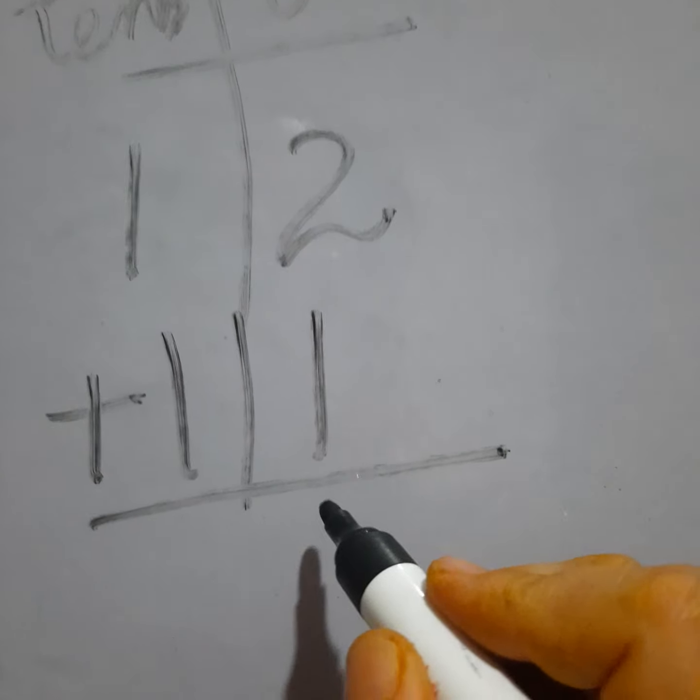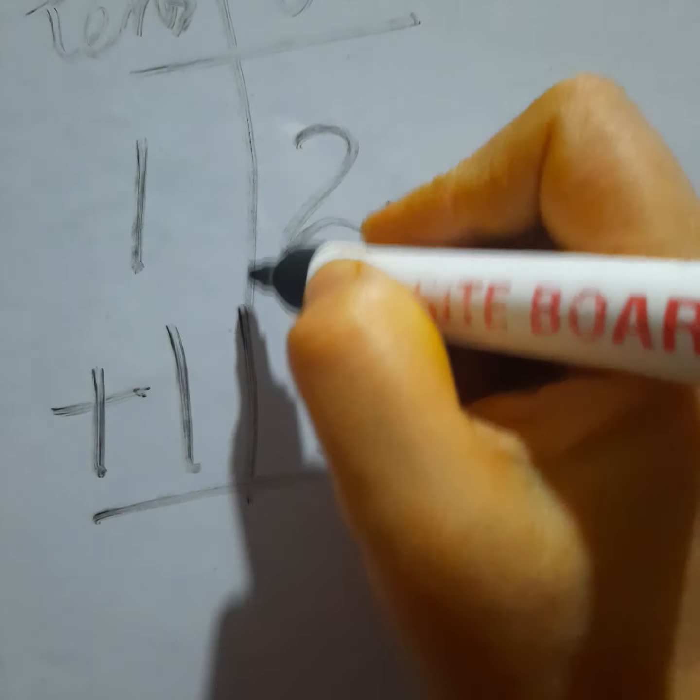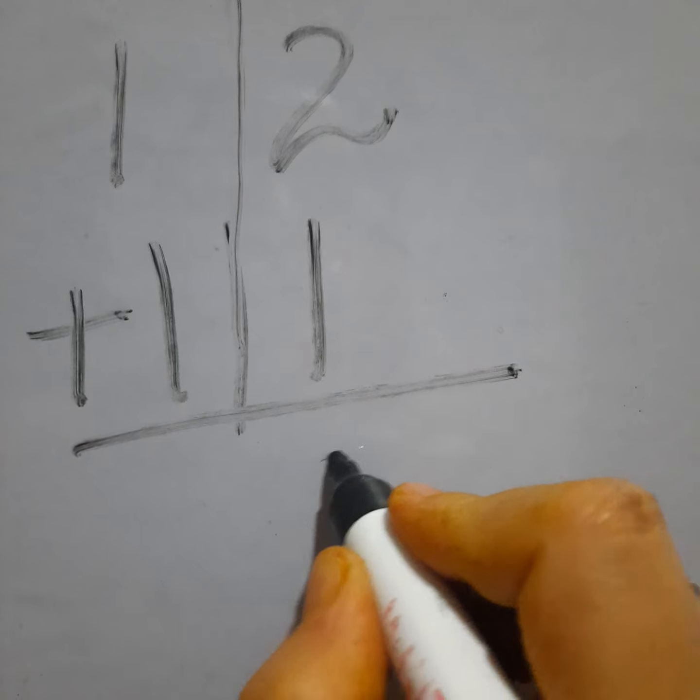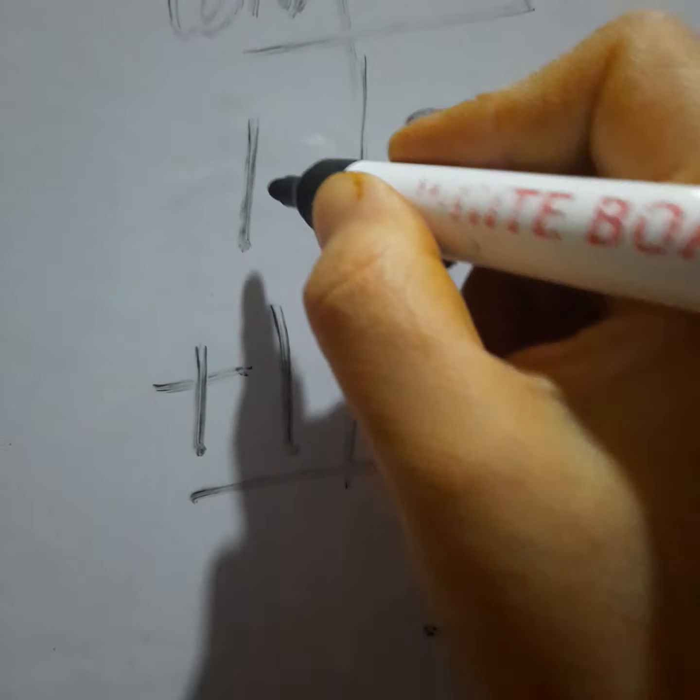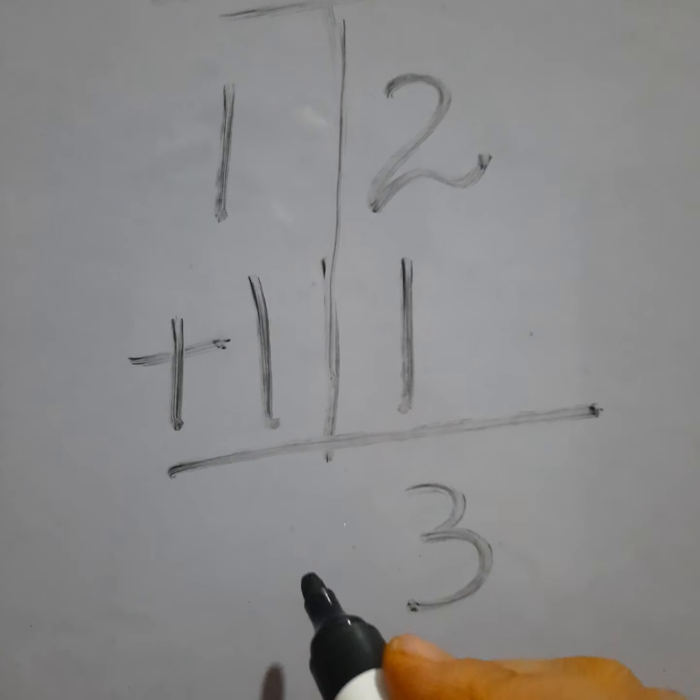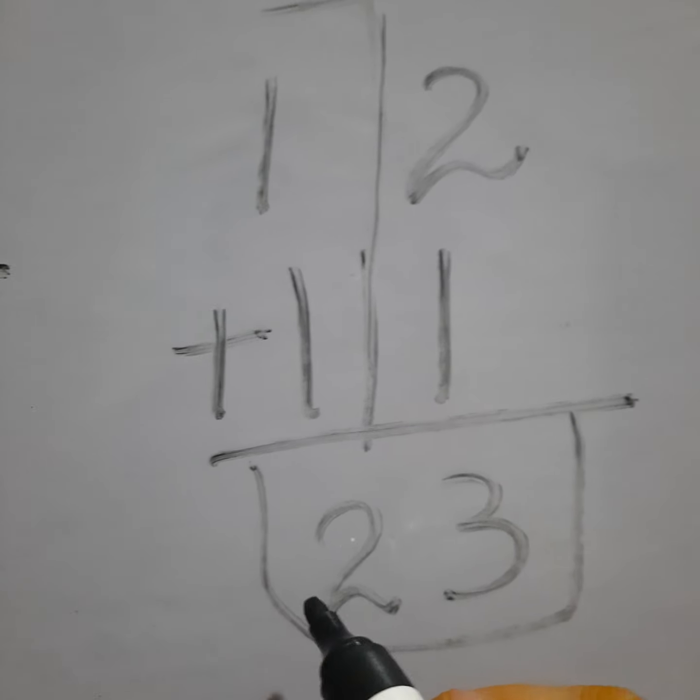Two plus one equals three - that goes in ones place. One plus one equals two - that goes in tens place. So the answer is 23. Three is in ones place, two is in tens place.